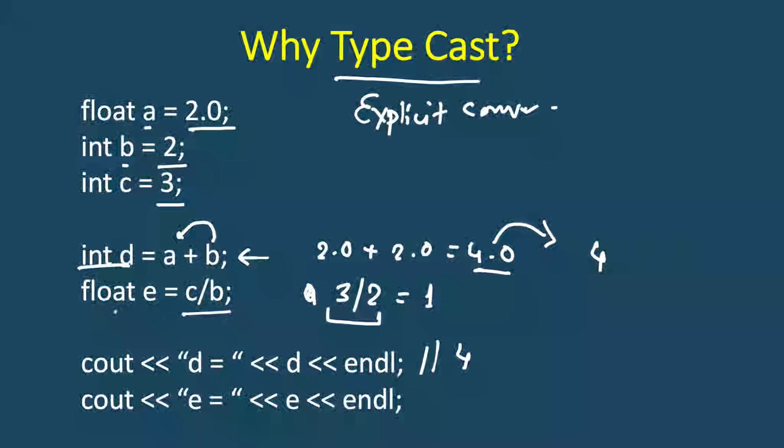And then it will be stored to a float variable so it will be converted to 1.0. So we will get 1.0, but this is wrong, or not wrong but not very precise. It should have been 1.5.